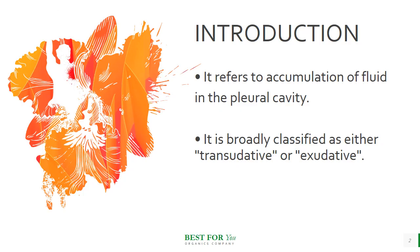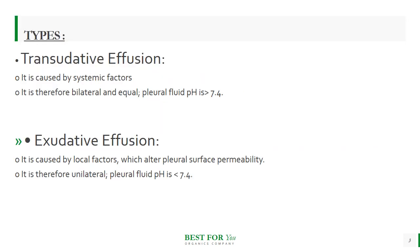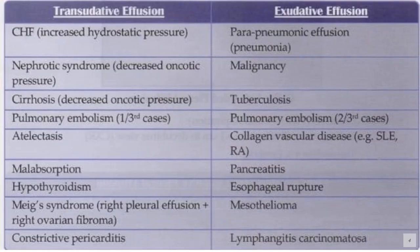Pleural effusion is broadly classified as either transudative or exudative. Transudative effusion is caused by systemic factors, therefore both lungs are equally involved, and the pleural fluid pH will be more than 7.4. Exudative effusion is caused by local factors which alter pleural surface permeability, therefore it affects a unilateral lung and the pleural fluid pH will be less than 7.4.